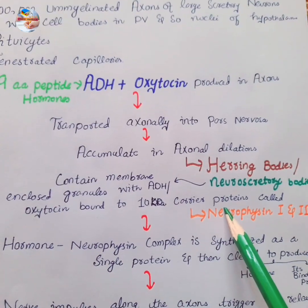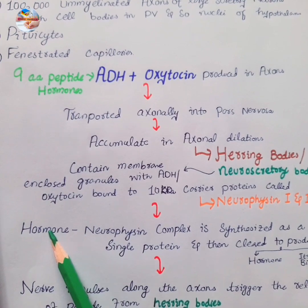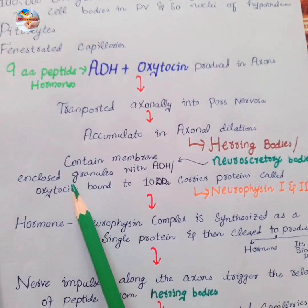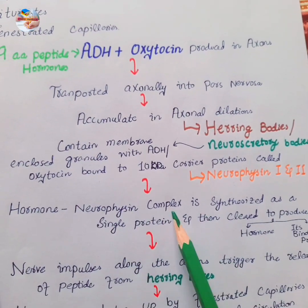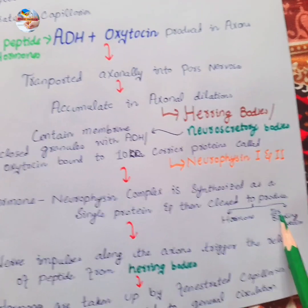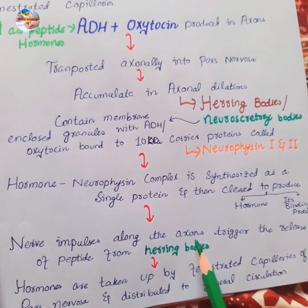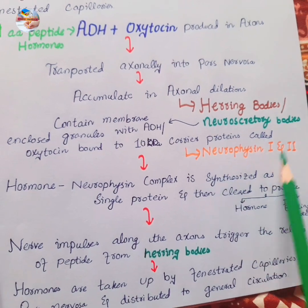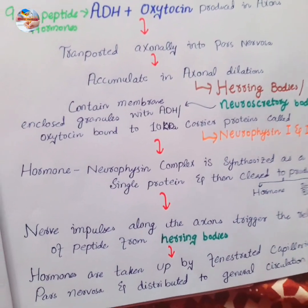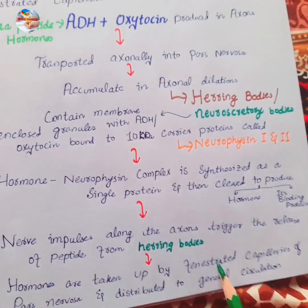The neurosecretory bodies contain membrane-enclosed granules with ADH and oxytocin bound to 10 kilodalton carrier proteins called neurophysin I and neurophysin II. This hormone-neurophysin complex is synthesized as a single protein enclosed in granules, and then the complex is cleaved to produce the hormone and its binding protein. When nerve impulses travel along the axons, they trigger release of the peptide from the herring bodies, releasing the hormone and its binding protein. The hormones are then taken up by the fenestrated capillaries of the pars nervosa and distributed to the general circulation.